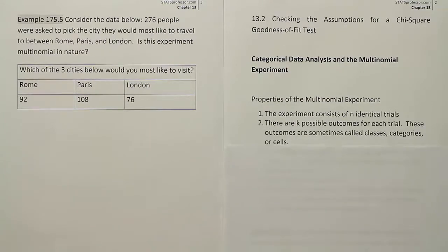Okay, let's look at condition two. Condition two says there are k possible outcomes for each trial, in this case three categories that we're going to put our responses into. So everyone will have to choose among Rome, Paris, London. So there are exactly three categories or three possible outcomes for the question.